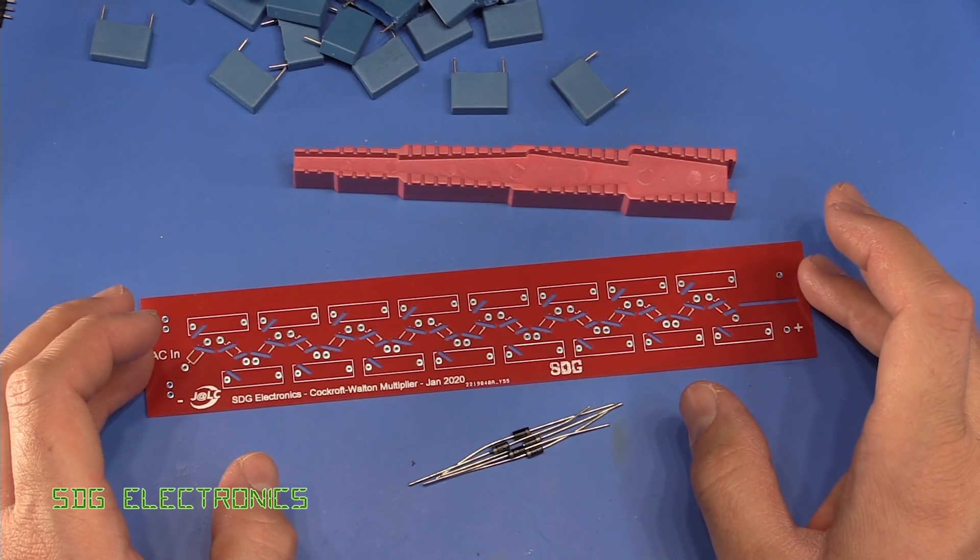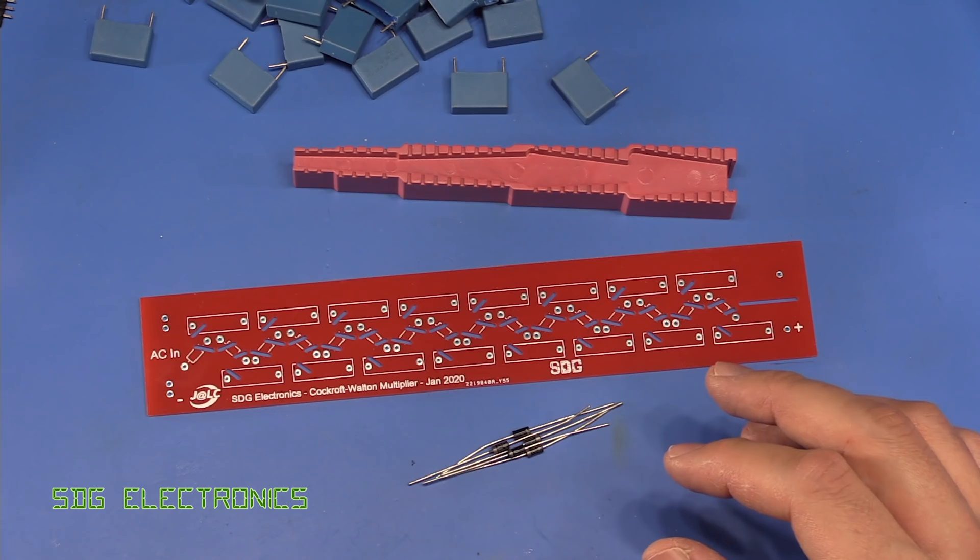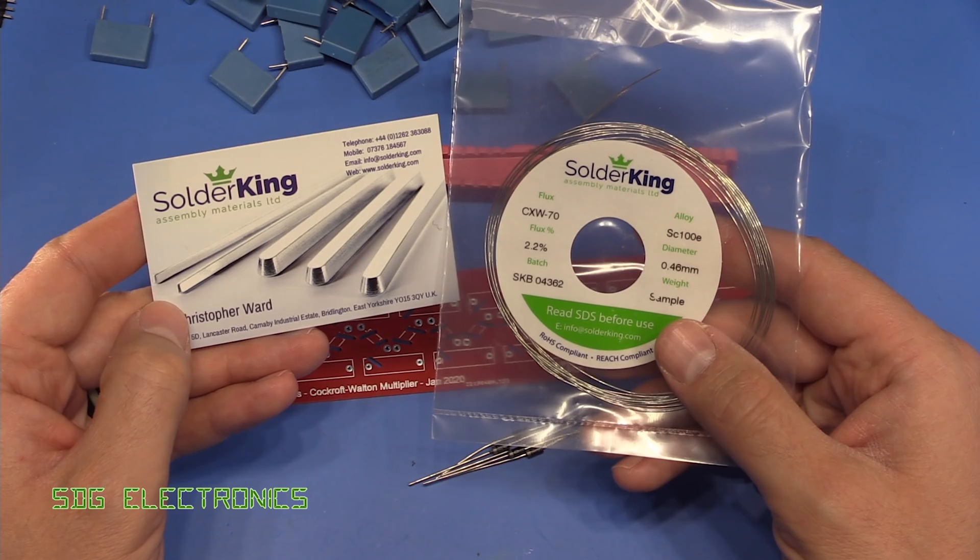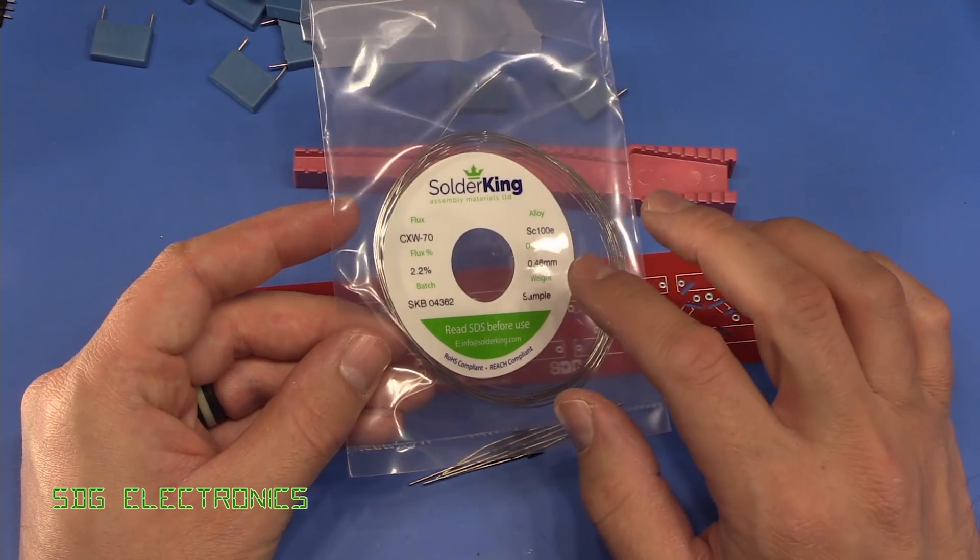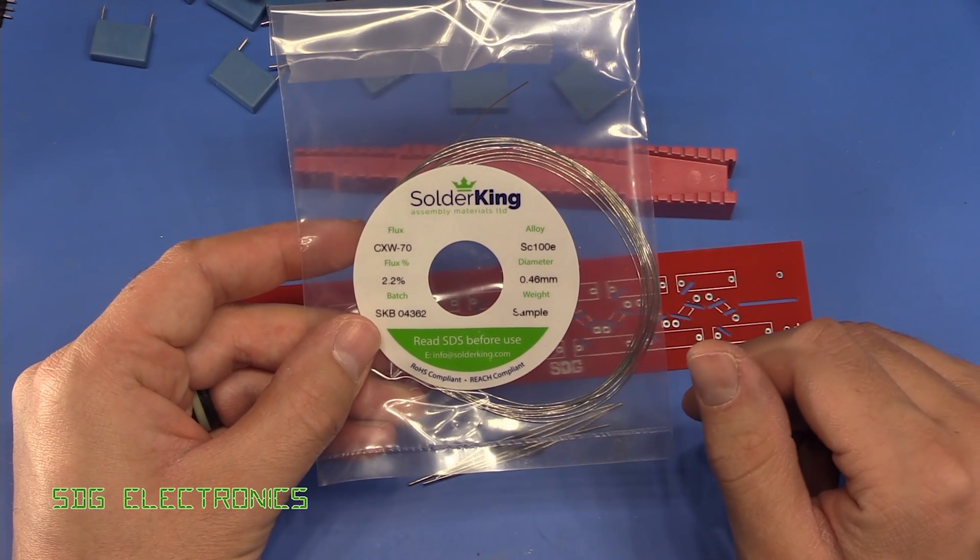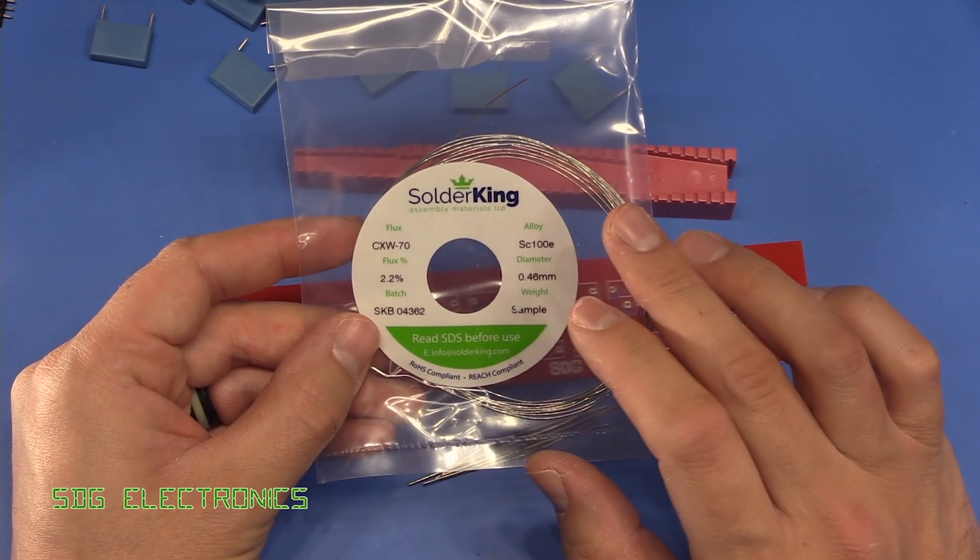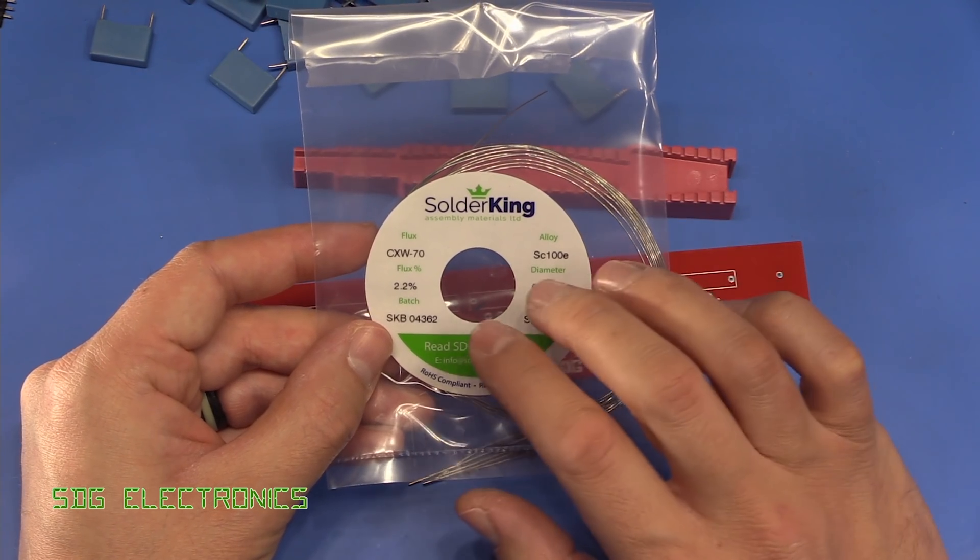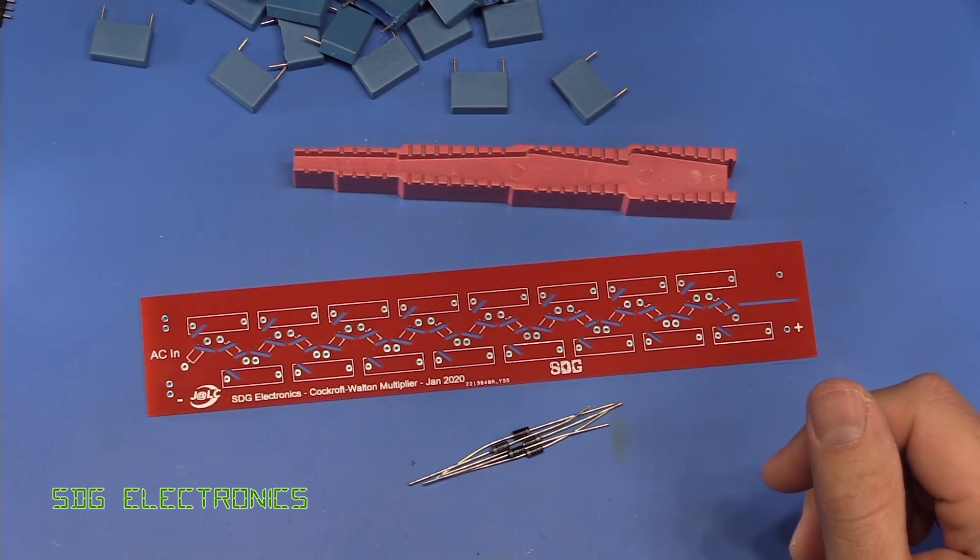So let's try soldering up this board and see if it behaves the same as the simulations. And to solder these components in, we are going to try using this solder wire from SolderKing Assembly Materials, which Chris Ward kindly sent through. This is a lead free alloy. The SC100 is the way that the industry is going really. So eliminating the copper and that kind of thing that have been in some of the lead free alloys previously. This is basically 100% tin with a few other materials and flux, obviously. So we'll see how this behaves when soldering.